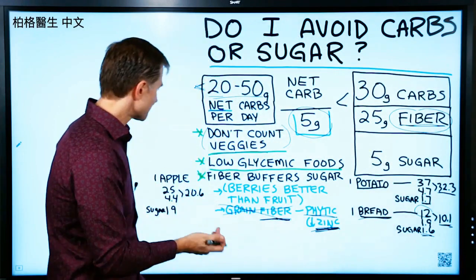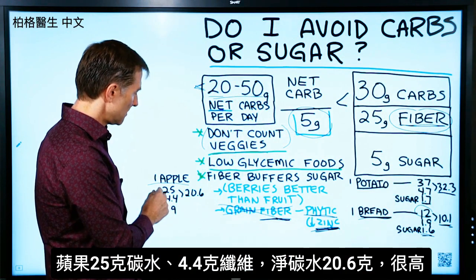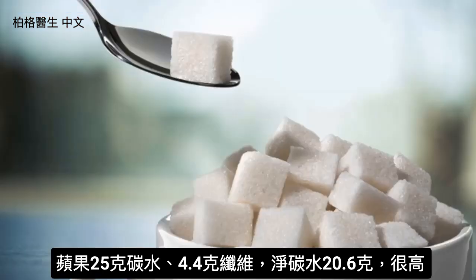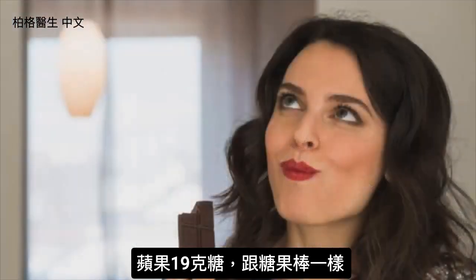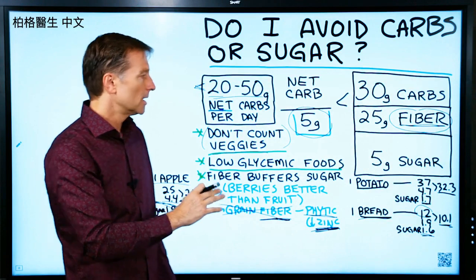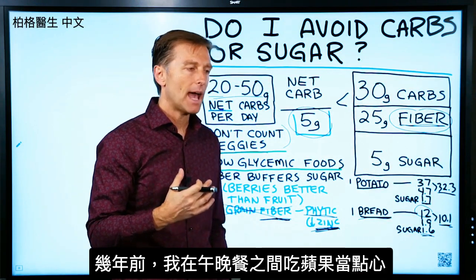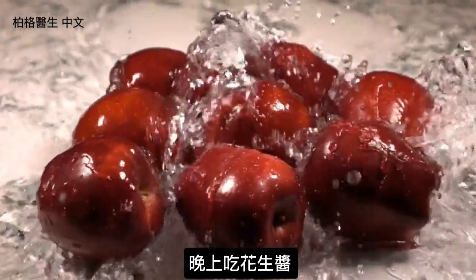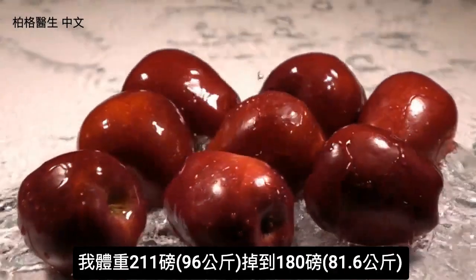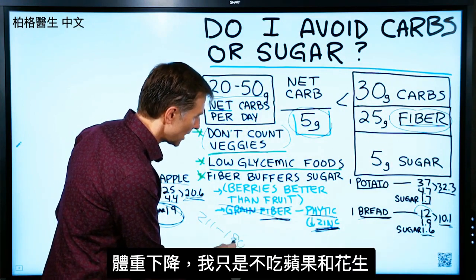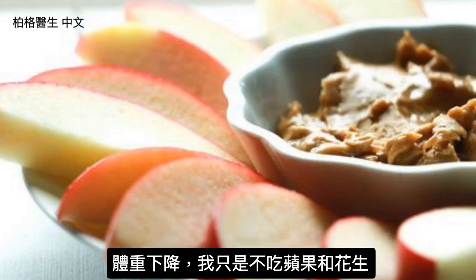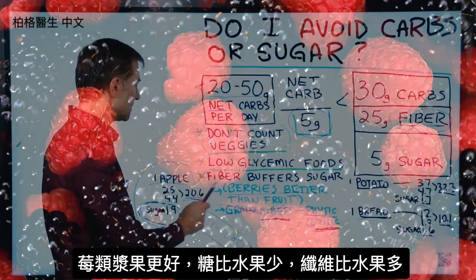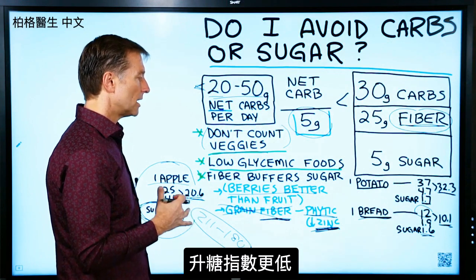What about fruit? An apple has 25 grams of carbs and 4.4 grams of fiber, giving us a net carb of 20.6 — and 19 grams of sugar. This is like eating a candy bar. Several years ago, I was consuming apples as a snack between lunch and dinner, and apples with peanut butter in the evening. I was at 211 pounds; I'm now at 180. All I really did was cut out those snacks. Apples will definitely keep you from getting into ketosis. Berries are much better because they're less sweet, have higher fiber, and are lower on the glycemic index.